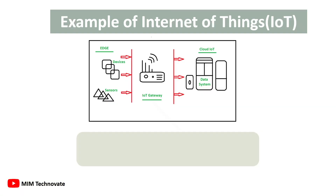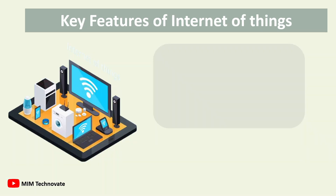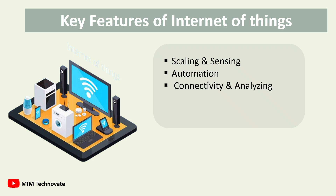Examples of Internet of Things include object detection software and electronic vehicle systems. Features of the Internet of Things include scaling and sensing, automation, connectivity and analyzing, endpoint management, and connectivity.